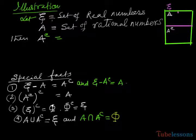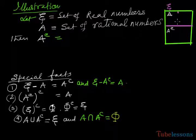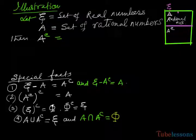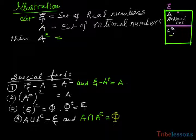Another illustration: let xi be the set of all real numbers and A be the set of rational numbers. If we exclude all rational numbers from xi, then we get A complement as the set of irrational numbers.